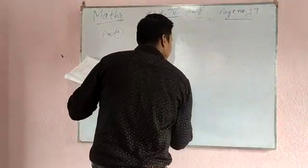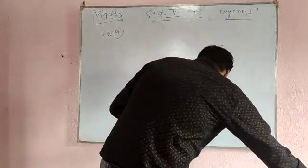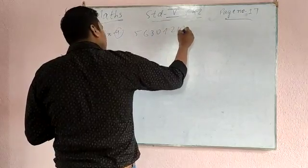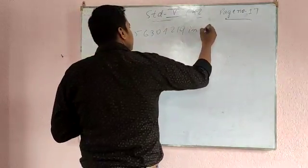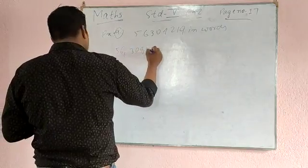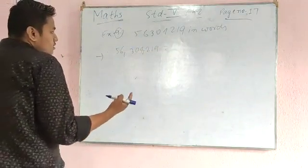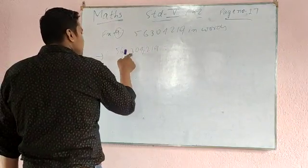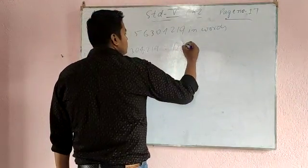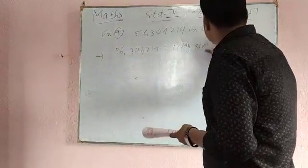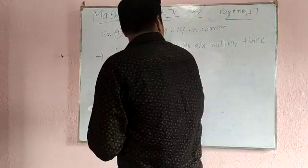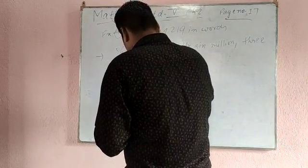Come to example number 9. Write the following in words in the international system: the number 5, 6, 3, 0, 4, 2, 1, 9. First put the comma: 56, 304, 219. So you will write 56 million. In the Indian system this would be 1 crore, but here in the international system you write 56 million, after that 304 thousand, after that 219.